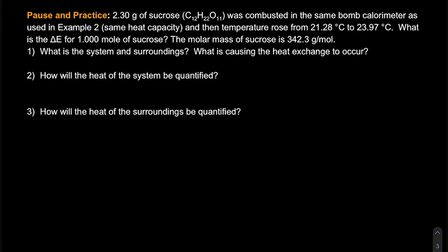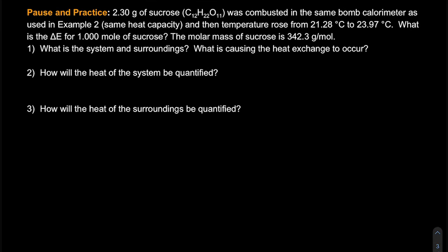Now let's apply this to a new reaction — I'll give you a chance to pause and practice. 2.3 grams of sucrose was combusted in the same bomb calorimeter, which means it's the same heat capacity we just identified. The temperature rose from 21.28 to 23.97 degrees Celsius for our calorimeter. What is the change in internal energy for one mole of sucrose reacting? We know the molar mass of sucrose. Go ahead and pause and try it on your own.